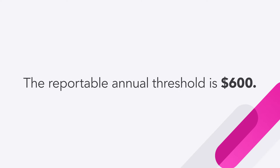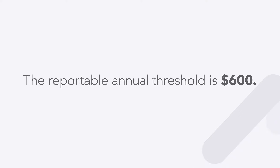Every year around January, businesses will submit a 1099-NEC to the IRS and give a copy to their contractors. The reportable annual threshold is $600. So if an independent contractor is paid less than that during the entire year, it is unlikely that they will get a 1099-NEC form from that business.